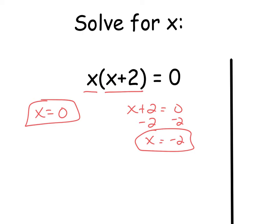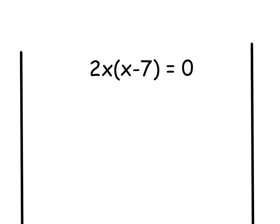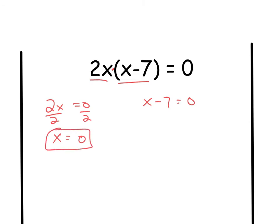Let's look at the next one: 2x times x minus seven equals zero. Either one of these has to equal zero, because they're multiplied together — that's that whole idea of two things multiplied equaling zero. So, we've got 2x equals zero and x minus seven equals zero. For the first one, divide by two on both sides and zero divided by two is zero. For the next one, add seven to both sides and we get x equals seven. So, this has two answers: zero and seven.